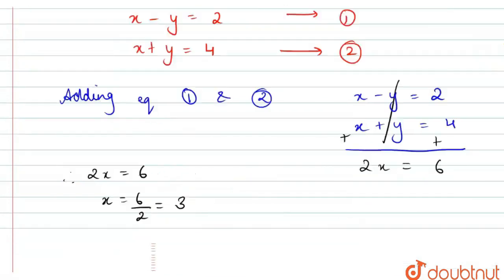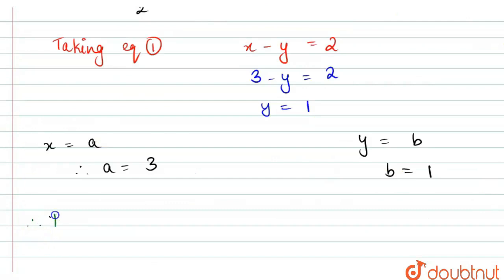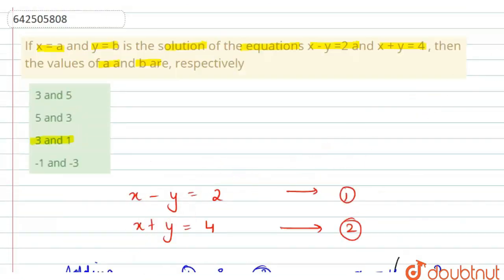We can write the conclusion. Therefore, the values of a and b respectively are 3 and 1. I hope you understood this explanation. Thank you.